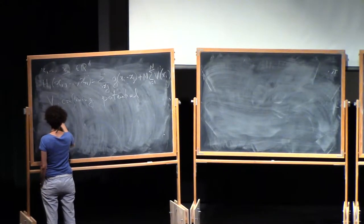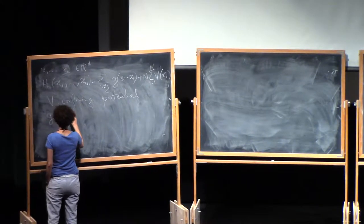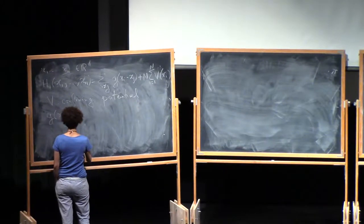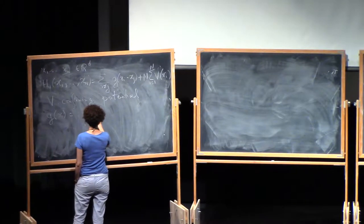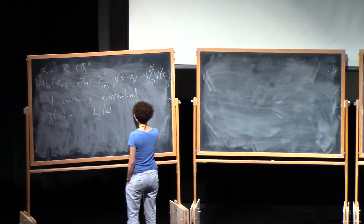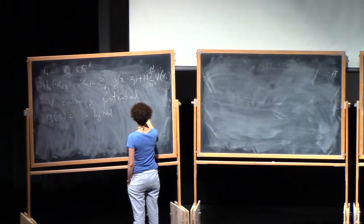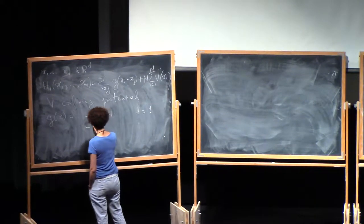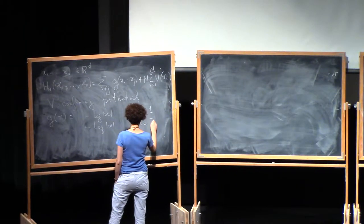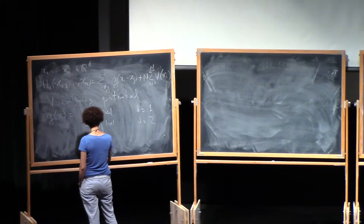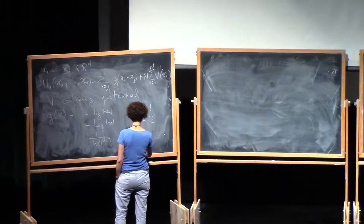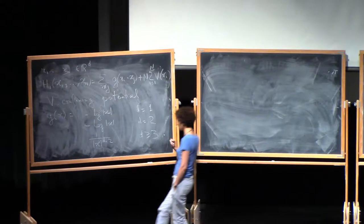And g has some very specific forms. So I'm going to consider three cases. Either g is minus log of the distance and we're in dimension 1, or g is minus log of the distance and we're in dimension 2, or g is 1 over x to the d minus 2 and we're in dimension larger or equal to 3.